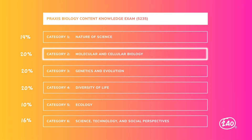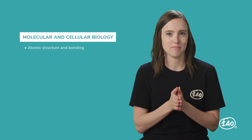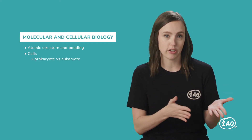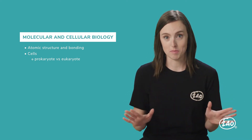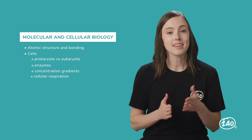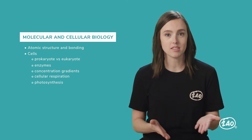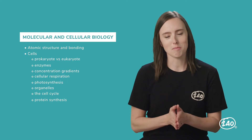Category 2 is where we start getting into the heart of the real science content. Starting small with atomic structure and bonding, we get a little larger with prokaryote versus eukaryote cells and all about how cells work. We're talking enzymes, concentration gradients, cellular respiration and photosynthesis, organelles, the cell cycle, and protein synthesis, just to name a few hot topics.